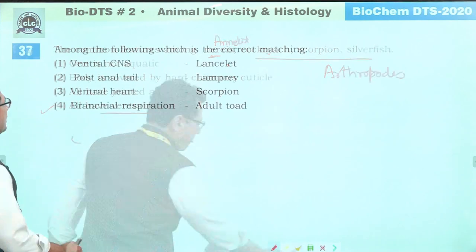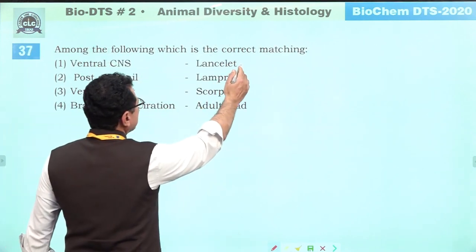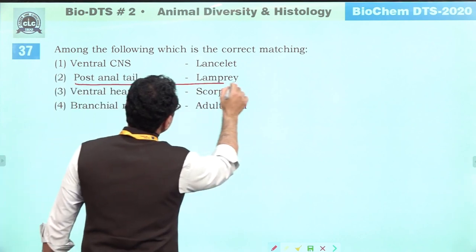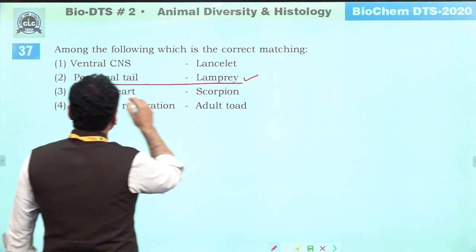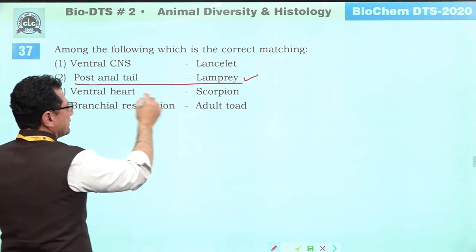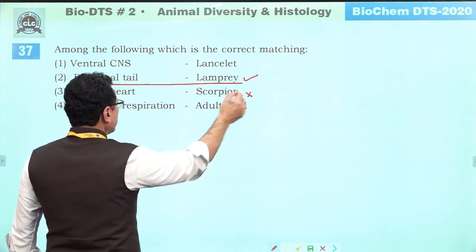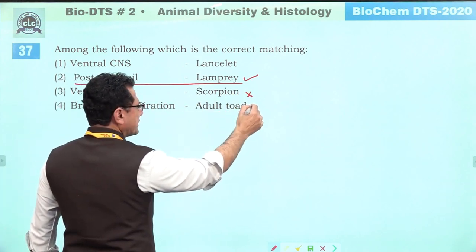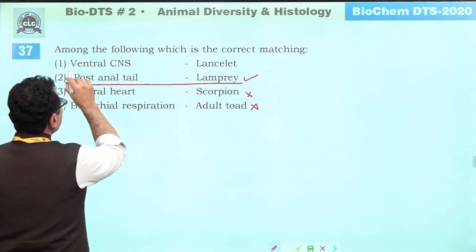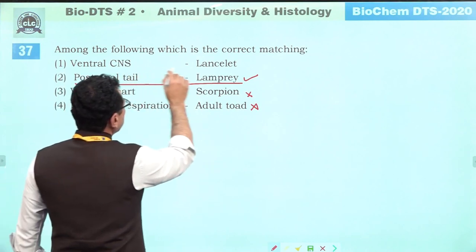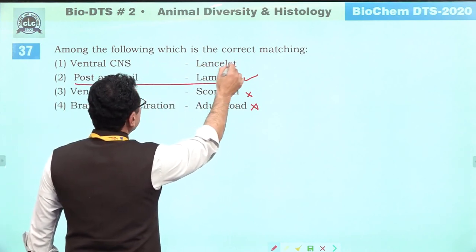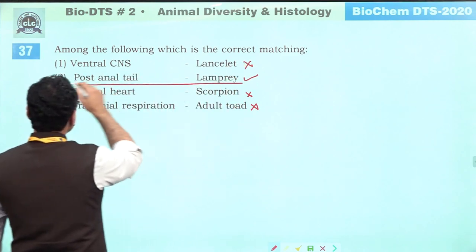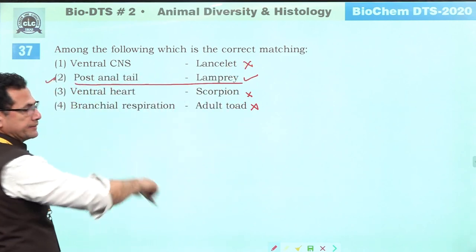Among the following, the correct matching: post-anal tail is a feature of lamprey — correct. Ventral heart is not seen there — it is dorsal. Branchial respiration in adult toad — no, skin or lungs are used. Ventral CNS in lancelot (cephalochordate) — no, it is dorsal. So answer is second.